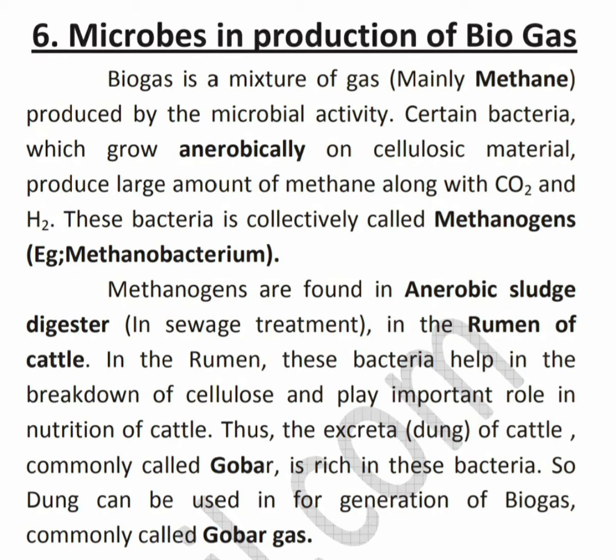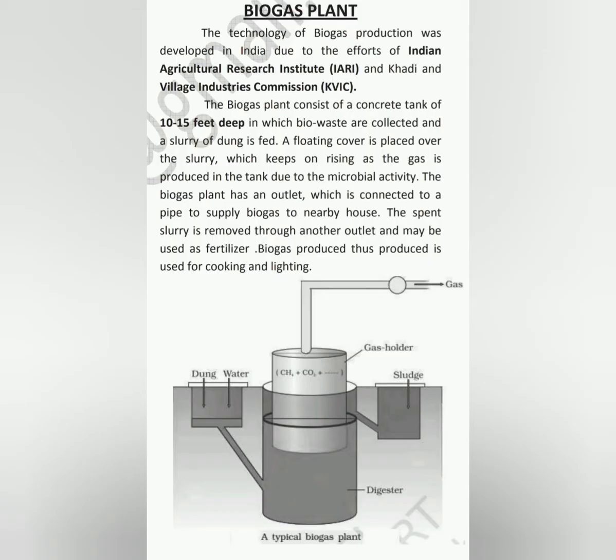So that is why we prepare biogas using cow dung. Cow dung is used because it contains methanogens bacteria in the excreta. That is why we know the gobar gas — because cow dung is used in the gobar, and hence the biogas is commonly called gobar gas.